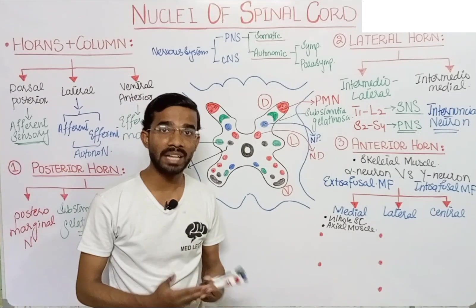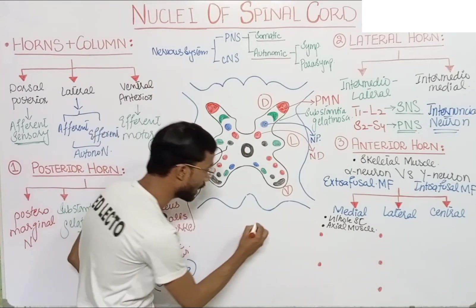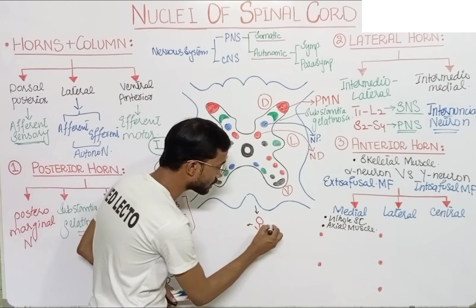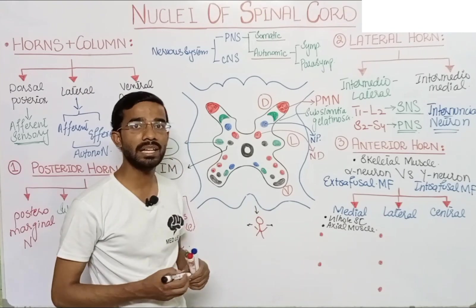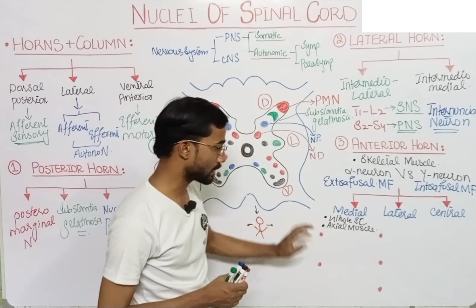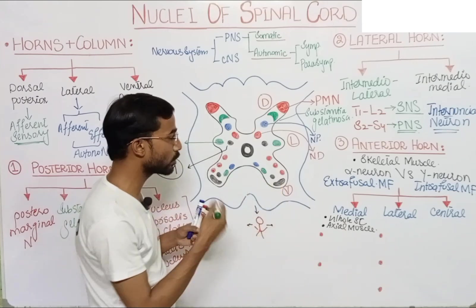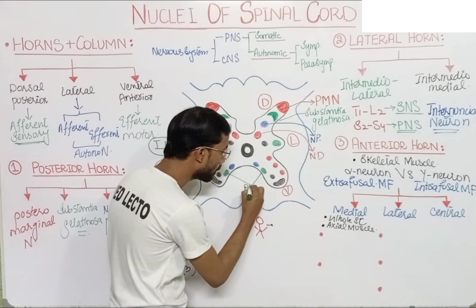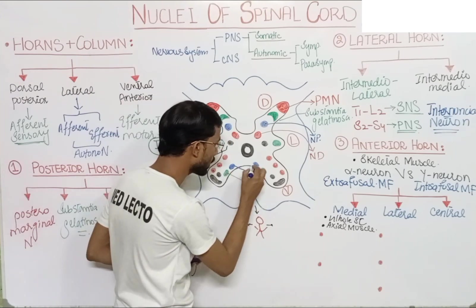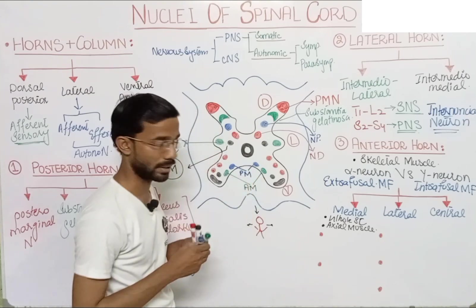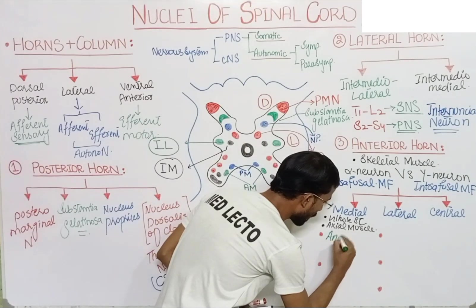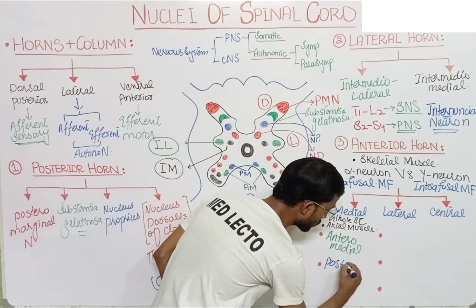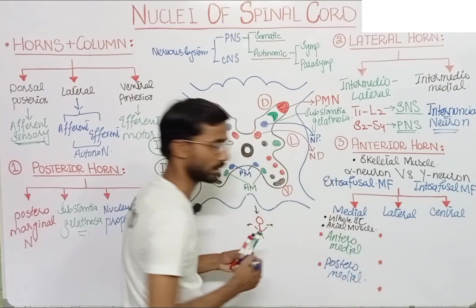The axial portion is the central portion of the body, while the part away from the central region is the appendicular region. The medial nuclei are further categorized into two: the anterior medial nucleus and the posterior medial nucleus.